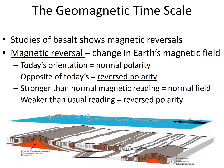This is called the geomagnetic timescale. Studies of basalt show magnetic reversals — a change in the Earth's magnetic fields. Today's orientation is called normal polarity, and if it differs from today's, it's called reverse polarity. Stronger than normal magnetic fields indicate normal polarity, and weaker than usual readings indicate reverse polarity. We can observe all these things on the ocean floor or in a rift valley.